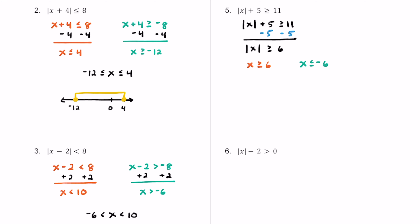In this case, we can't write these together — they go in two different directions. On the number line, we put 0 in the middle, 6 to the right, and negative 6 to the left. If x is greater than or equal to 6, it includes 6 and anything higher — so we shade in that direction. When x is less than or equal to negative 6, it can equal negative 6 or anything smaller, so we shade in that direction as well.